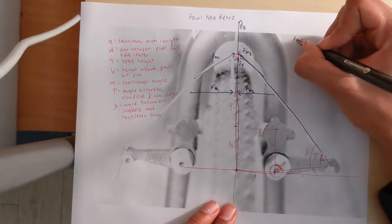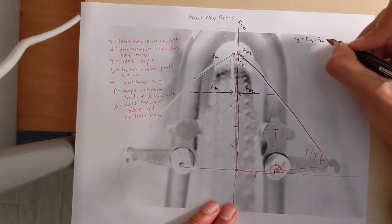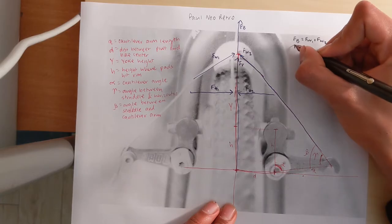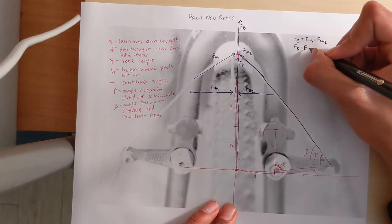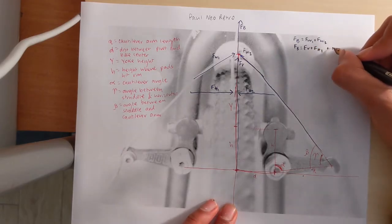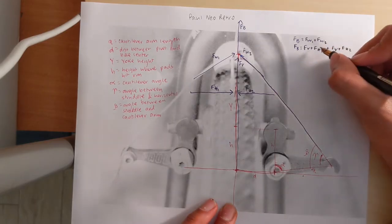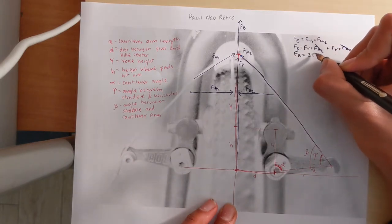So we can say that Fb equals Fw1 plus Fw2. We can also say that Fb equals Fv plus Fh2, this is for Fw2, but we can cancel these out because they're the same, and Fb equals 2Fv.